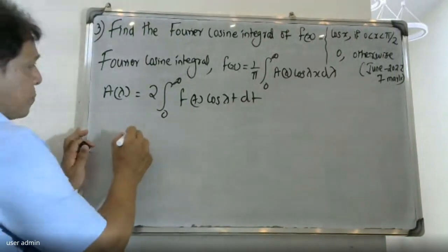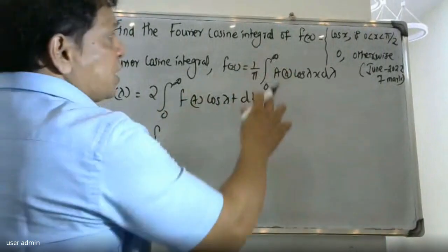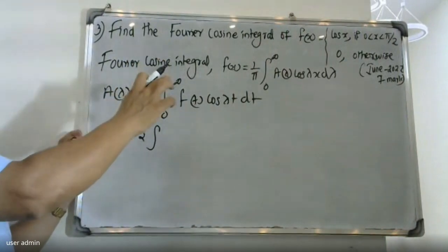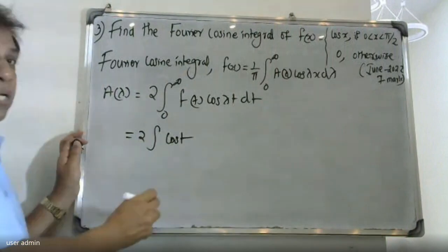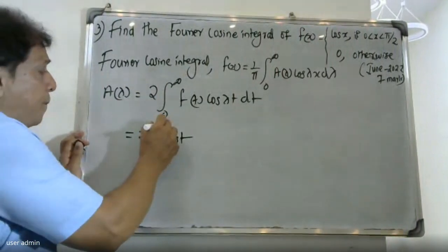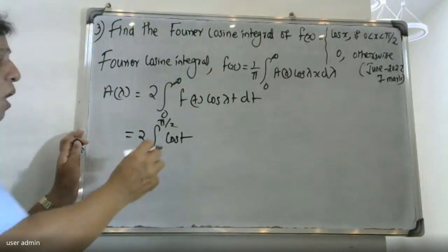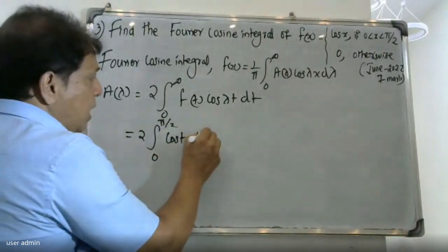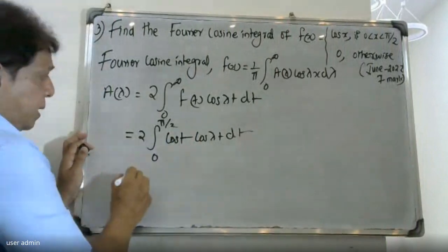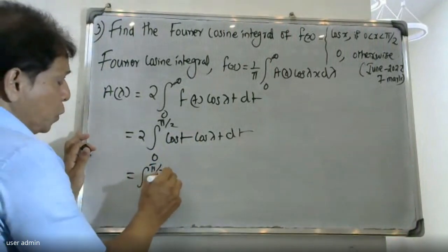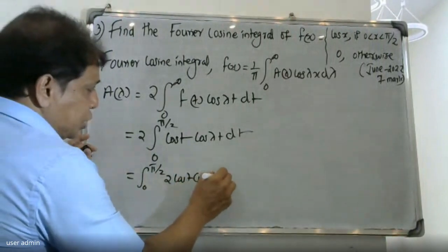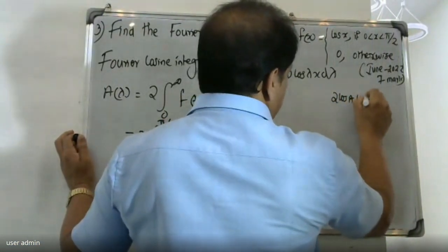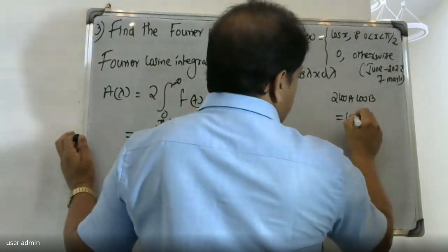By assumption, f(t) = cos(t). So we substitute f(t) = cos(t) and the integral becomes 2 ∫₀^(π/2) cos(t) cos(λt) dt.